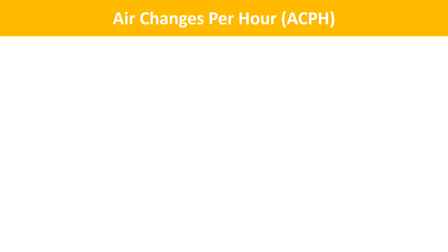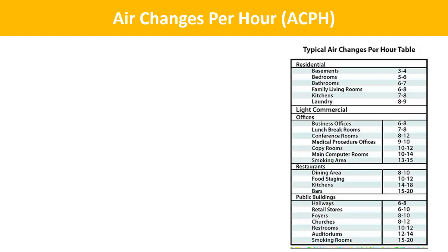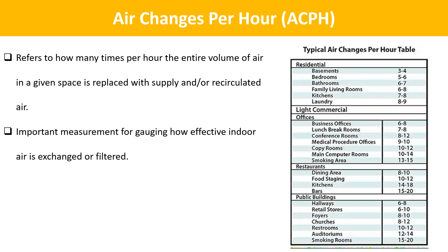The next term is Air Changes Per Hour. Air changes per hour refers to how many times per hour the entire volume of air in a given space is replaced with supplied or recirculated air. It is also sometimes referred to as air change rate or air exchange rate. Air changes per hour is a vitally important measurement for gauging how effectively indoor air is exchanged or filtered.